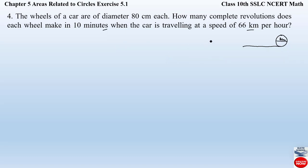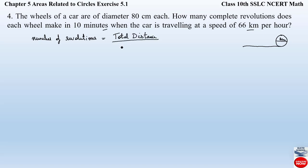To find the number of revolutions made by a wheel or any circular object, there is a formula. The formula is: Number of revolutions = Total distance ÷ Distance covered in one revolution. To find the number of revolutions made by a wheel, we divide the total distance covered by the wheel by the distance covered in one revolution.